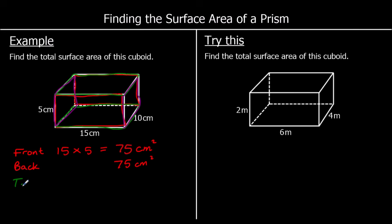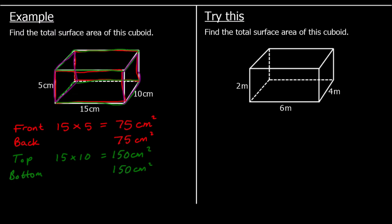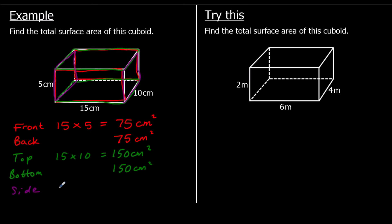For the top, we've got a rectangle which is 15 by 10. So 15 times 10 is 150cm squared. The bottom is identical to the top. And the side is 10 by 5, which is 50cm squared. And again there are two sides — two identical sides — so they both have an area of 50cm squared.